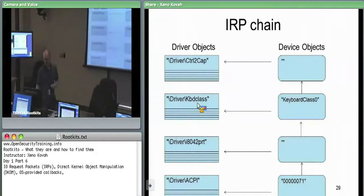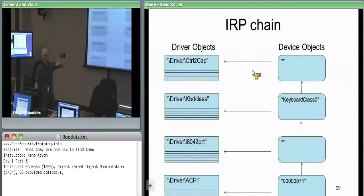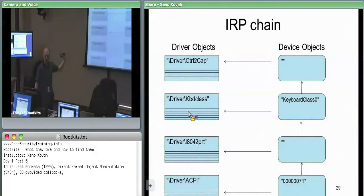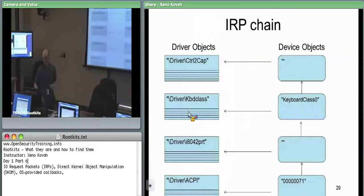In this particular case, an attacker, rather than registering above keyboard class zero, could just wait for the stuff to come down to the keyboard class zero level and fill themselves into that little array of function pointers. When the keyboard class driver would have found out about a packet coming down or coming up, the attacker can fill itself in at this function pointer table and hear about it that way.